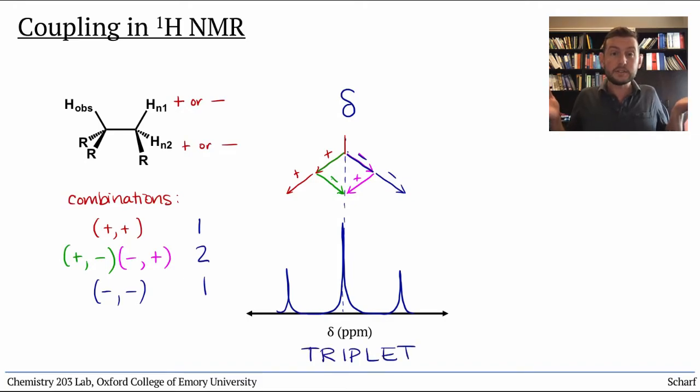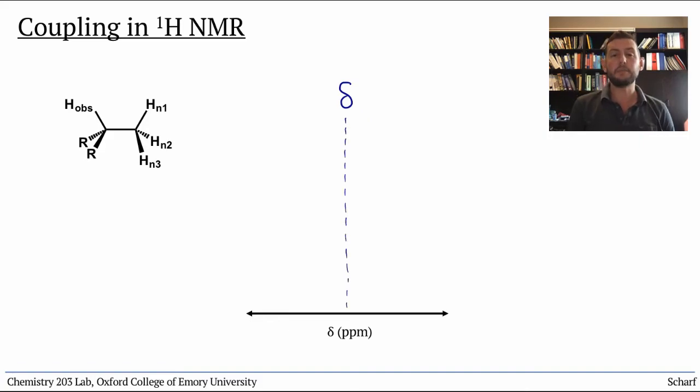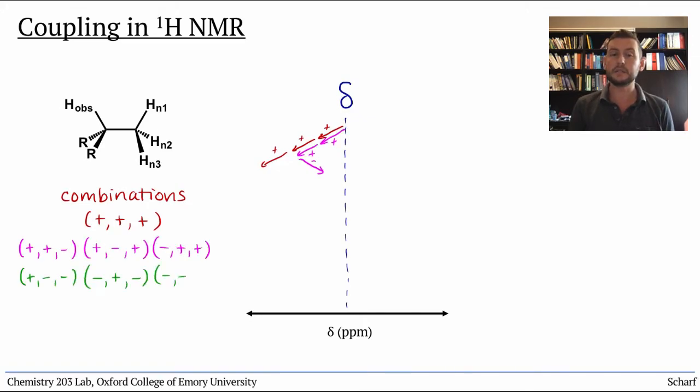What about three neighbors? They can have the following combinations of spin states: all three plus, two pluses and a minus, two minuses and a plus, and all three minuses. This gives a total of four peaks in a one to three to three to one ratio. We call it a quartet.